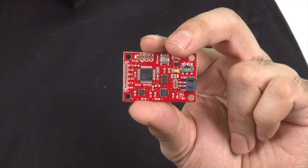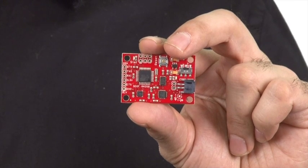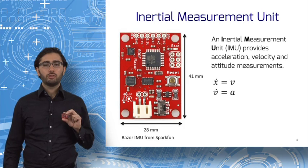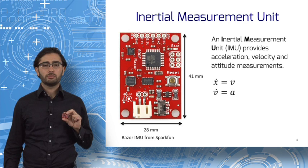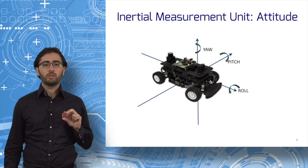An IMU provides acceleration, velocity, and attitude measurements. As you know from basic physics or mechanics, velocity is the time derivative of position. That's the speed. Acceleration is the time derivative of velocity. The other measurement an IMU gives is attitude. It is the orientation of the car in 3D space.